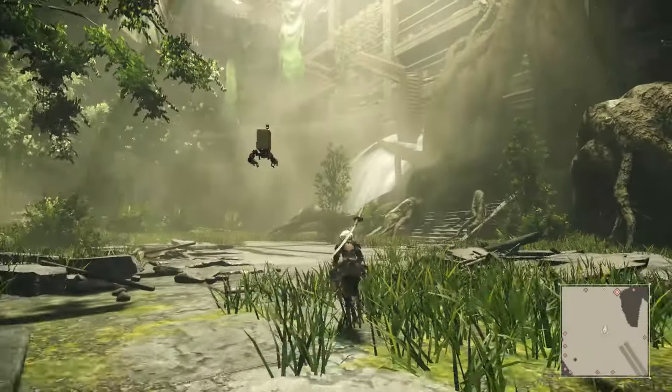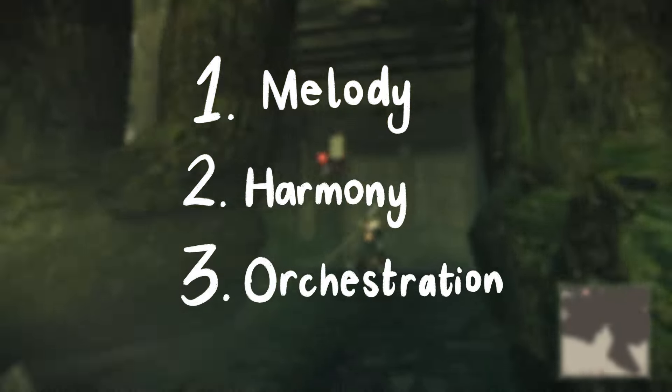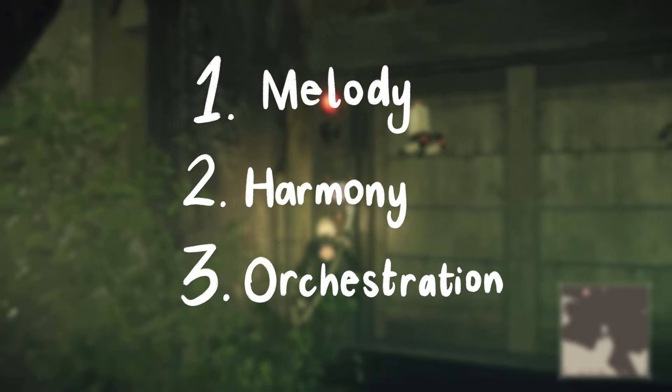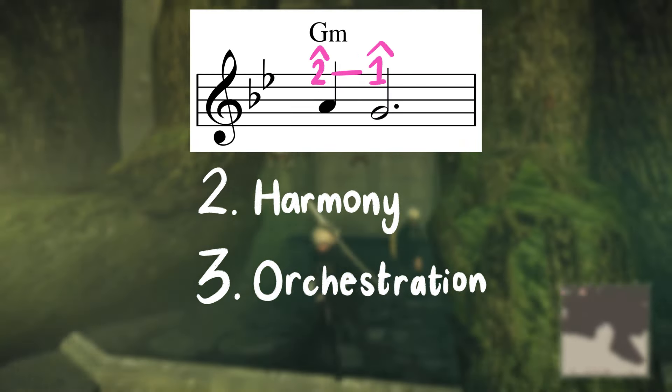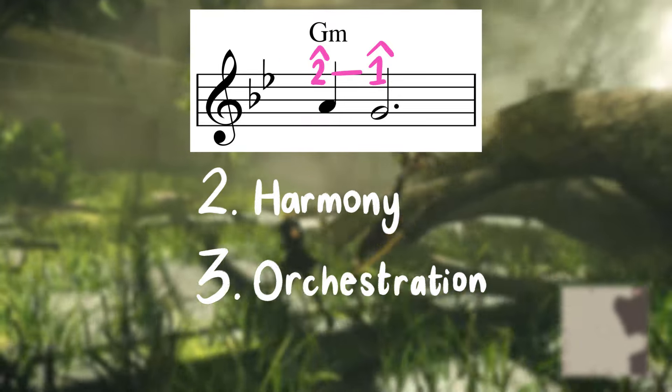We can break down the different aspects of Nier's music into its melodic, harmonic, and orchestrational tendencies. Melodically, emphasizing non-chord tones that resolve to chord tones over a minor tonic chord creates a very serious, gloomy sound.